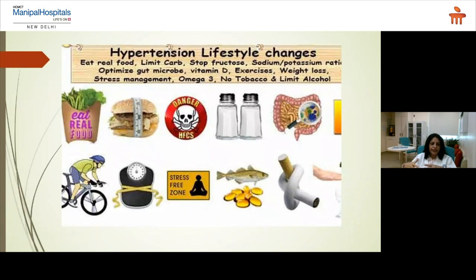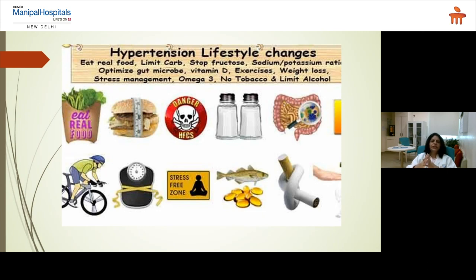What you can institute yourself are lifestyle changes, because that is the one thing only you can do — and this goes a long way in preventing and controlling this condition. Lifestyle changes mainly involve how much physical activity you are doing, what your diet is, how much salt you are taking, and whether you are habitual to smoking or alcohol.